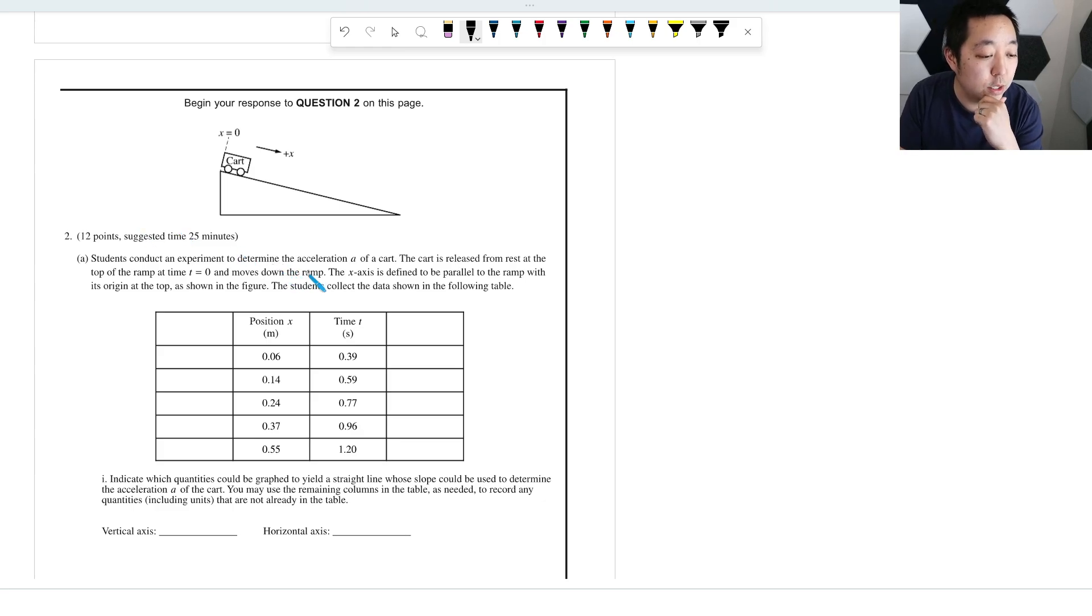Students conduct an experiment to determine the acceleration of cart A. The cart is released from rest, so I always like to write v equals zero when it's from rest at the top of the ramp and moves down the ramp. The x-axis is defined to be parallel to the ramp with its origin at the top. The students collect the data in the following figure, position versus time. Indicate which quantity should be graphed to yield a straight line whose slope could be used to determine the acceleration of the cart.